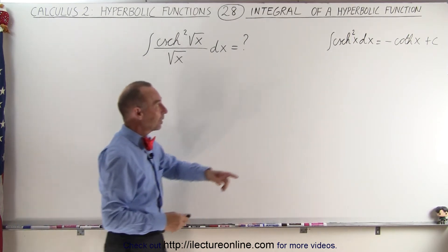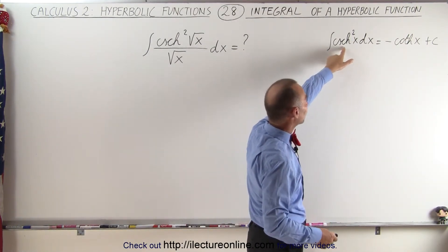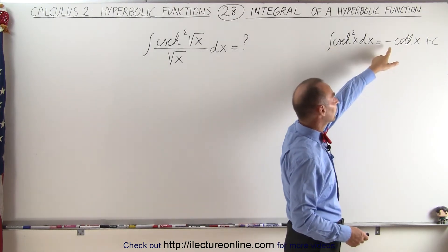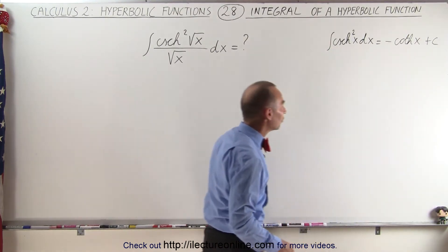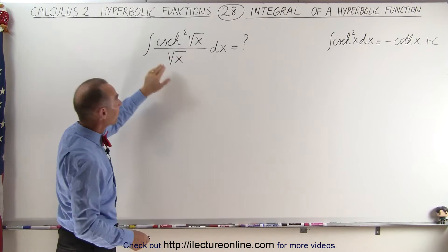Of course we have to realize that the integral of the hyperbolic cosecant is equal to the negative hyperbolic cotangent. So how do we solve this problem here?